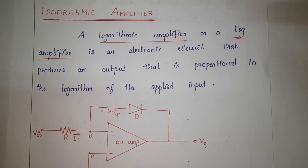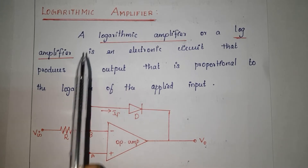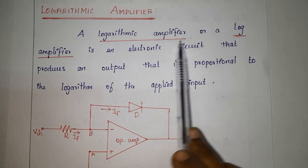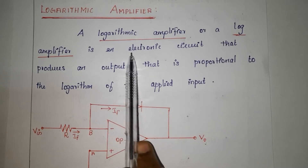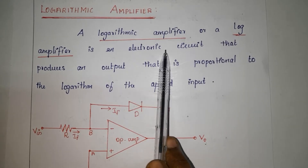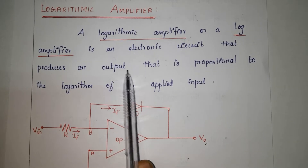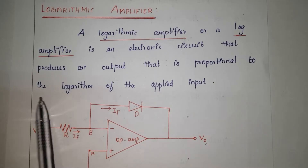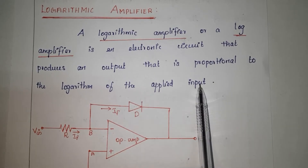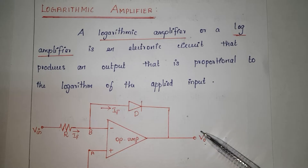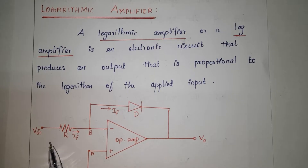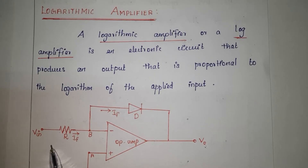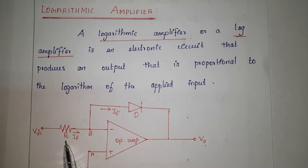Let's see the logarithmic amplifier. A logarithmic amplifier, or log amplifier, is an electronic circuit that produces an output that is proportional to the logarithm of the applied input. So the output voltage is proportional to the logarithm of the applied input voltage.